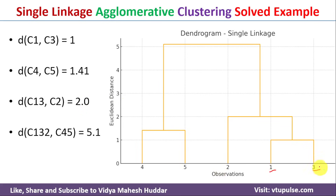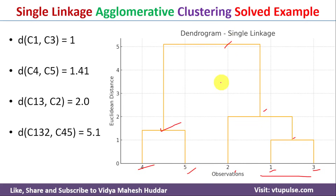To draw the dendrogram: first, we merge C1 and C3 with merging cost 1. Then we merge C4 and C5 with merging cost 1.41. Next, we merge C13 and C2 with merging cost 2. Finally, we merge C132 with C45 with merging cost 5.10. This is how we calculate the distances and construct the dendrogram using single linkage agglomerative clustering.